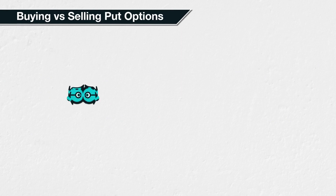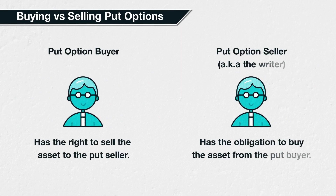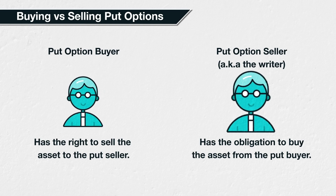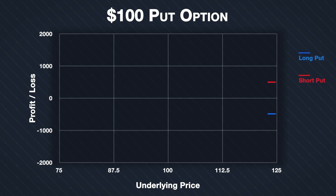Every option trade has a buyer and a seller. Selling an option is sometimes referred to as writing an option. So far we have focused on put options from the buyer's side, but it's also important to understand the transaction from the seller's point of view. Apart from any trading fees, an option contract is a zero-sum game.